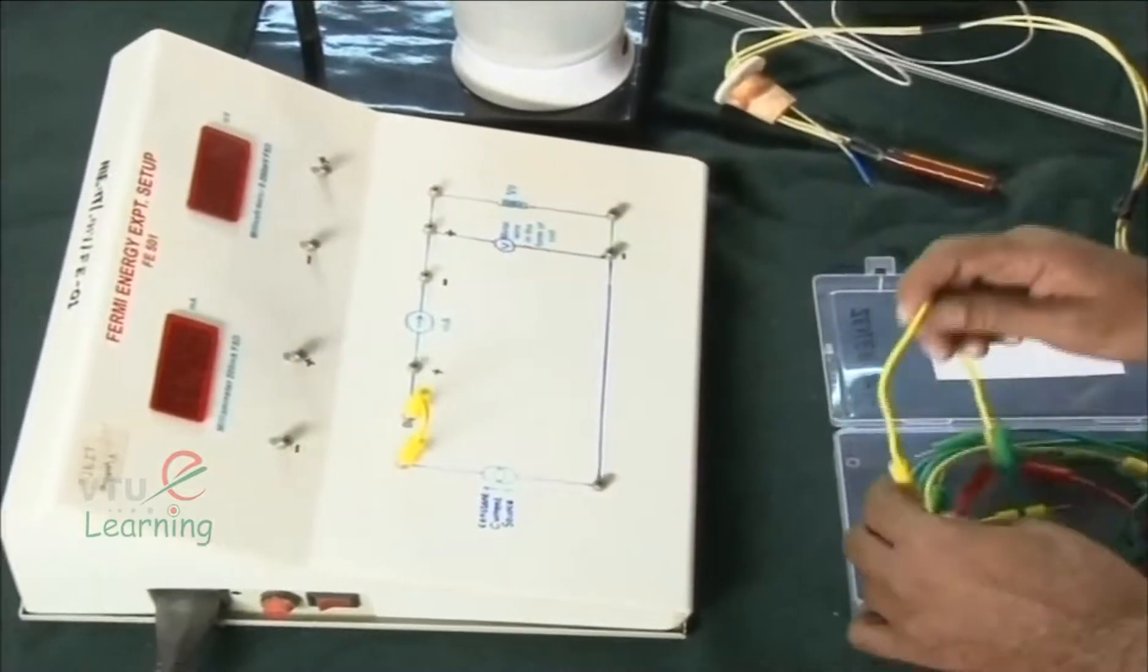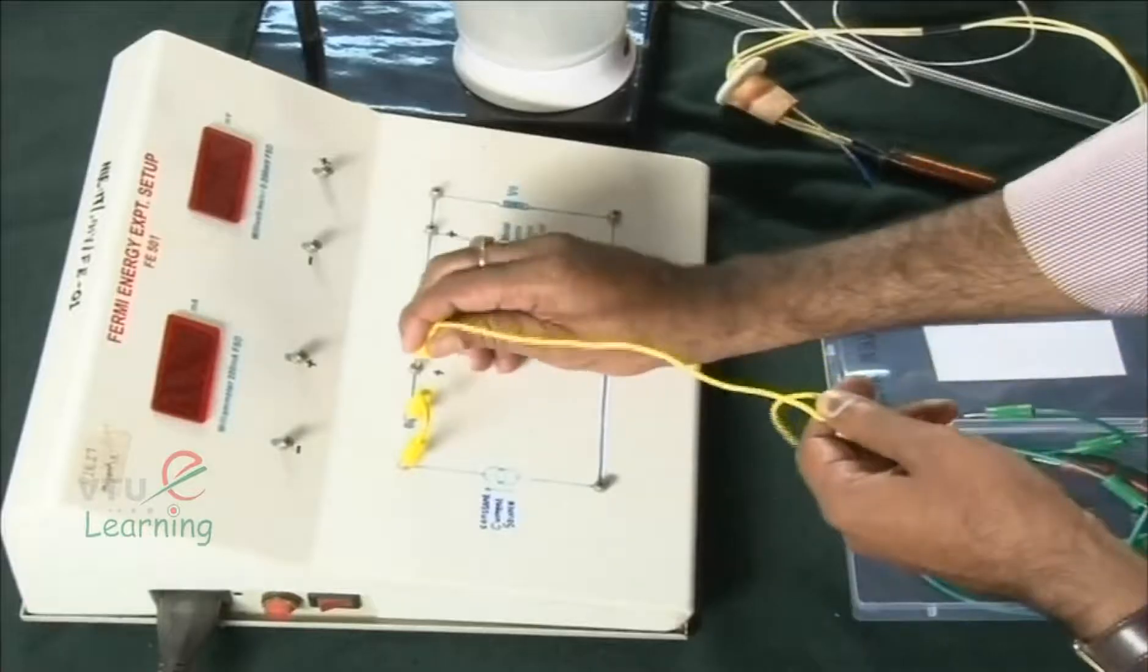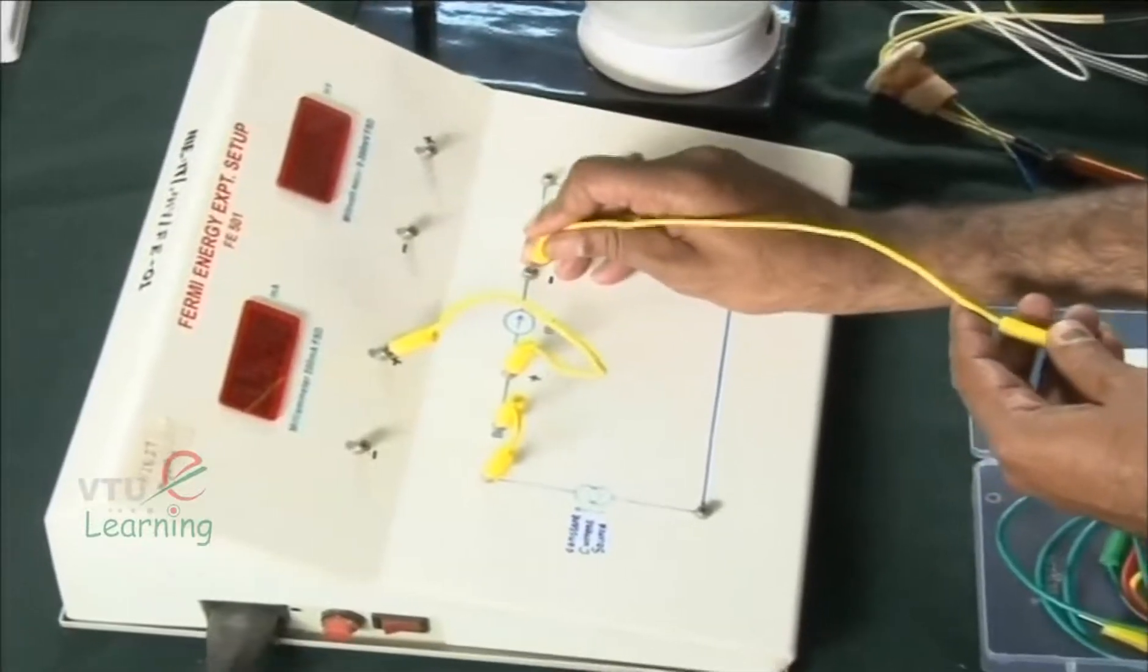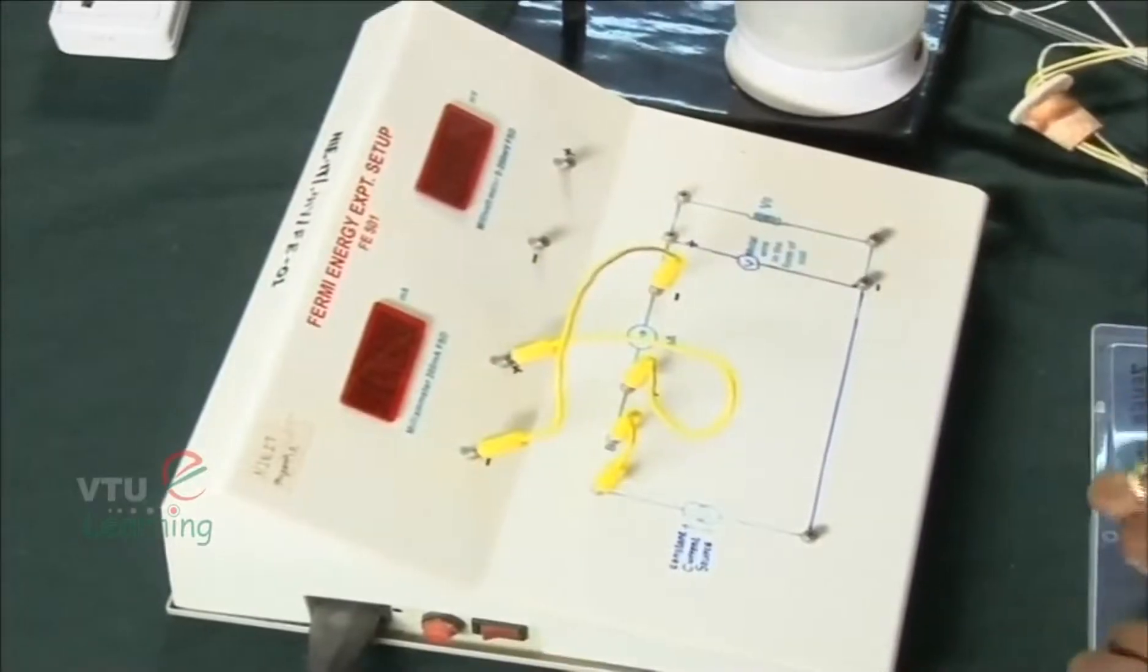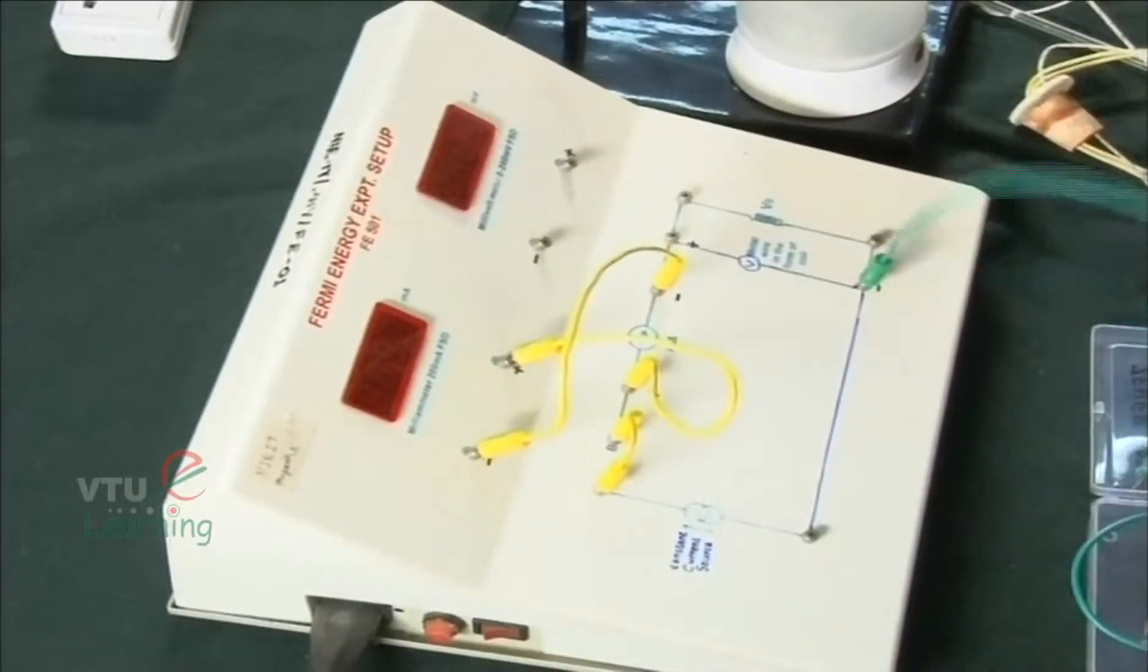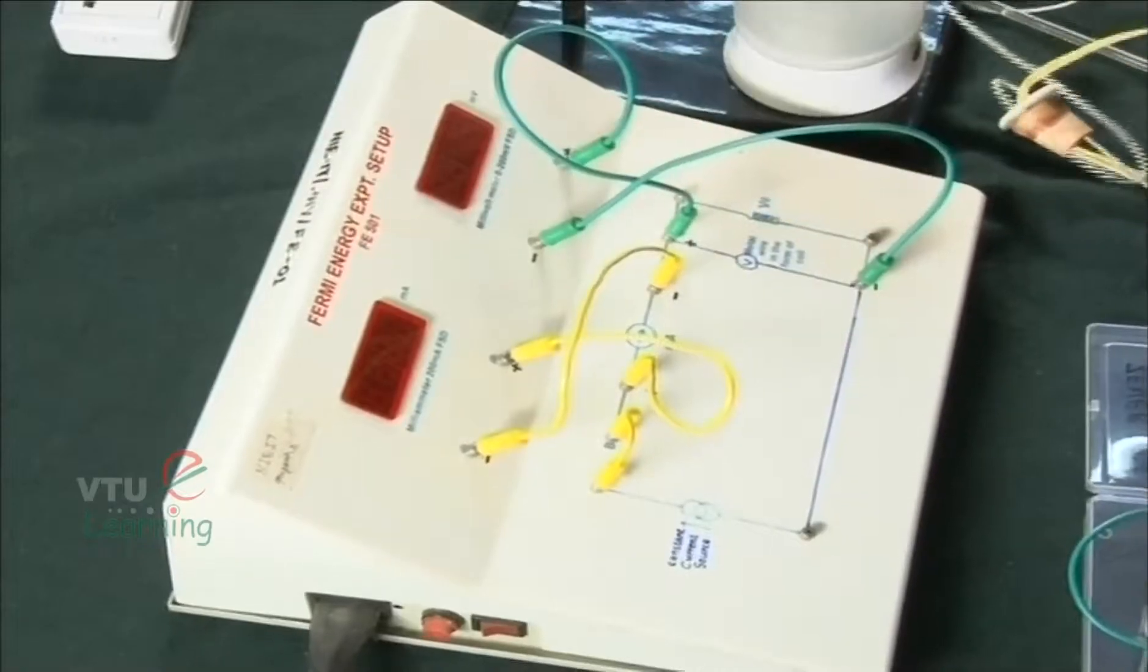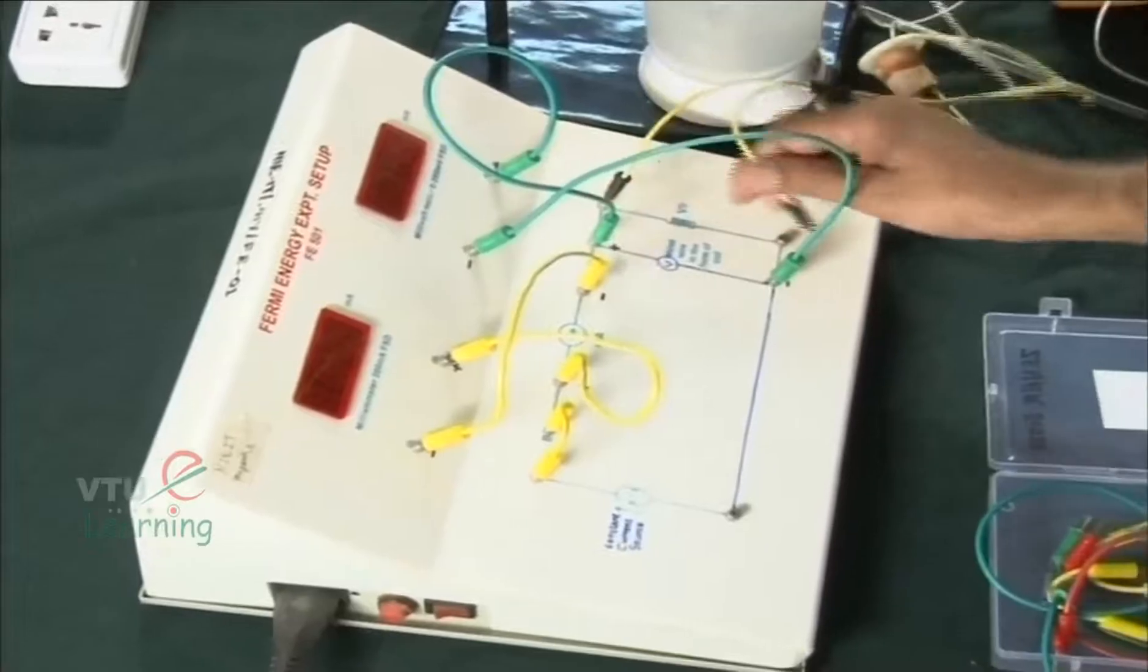So we now rig up the circuit. We close first of all the gap and connect the constant current source. We connect the milliammeter such that the positive is connected to positive and negative is connected to the negative. Then parallel connection of the voltmeter such that the positive is connected to positive and negative is connected to the negative. Then the copper coil is inserted in the circuit at the designated place.